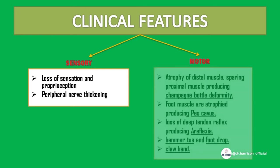Moving on to motor symptoms: there is atrophy of distal muscles sparing proximal muscles, producing champagne bottle deformity. Foot muscular atrophy produces pes cavus. Loss of deep tendon reflexes produces areflexia. In severe cases, it may cause hammer toe, foot drop, and claw hand.